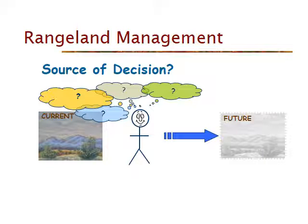Depending on what your worldview is, you have to make decisions about the appropriate way to get to your desired future. Where do we get that information? Hopefully in this class we use scientific information and well-tested theories to decide how to get to our future desired condition. But we don't know everything about the world, so we're also going to use traditions, make guesses, and sometimes use hunches. Try to make decisions based on scientific information as much as possible, but there's a lot of other information we use too.